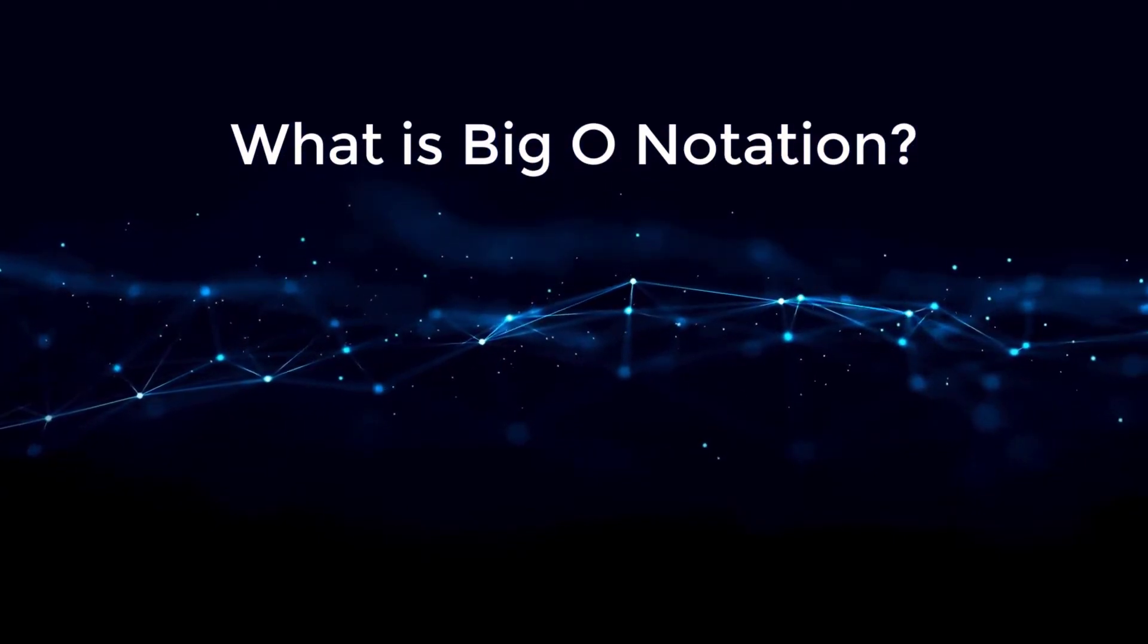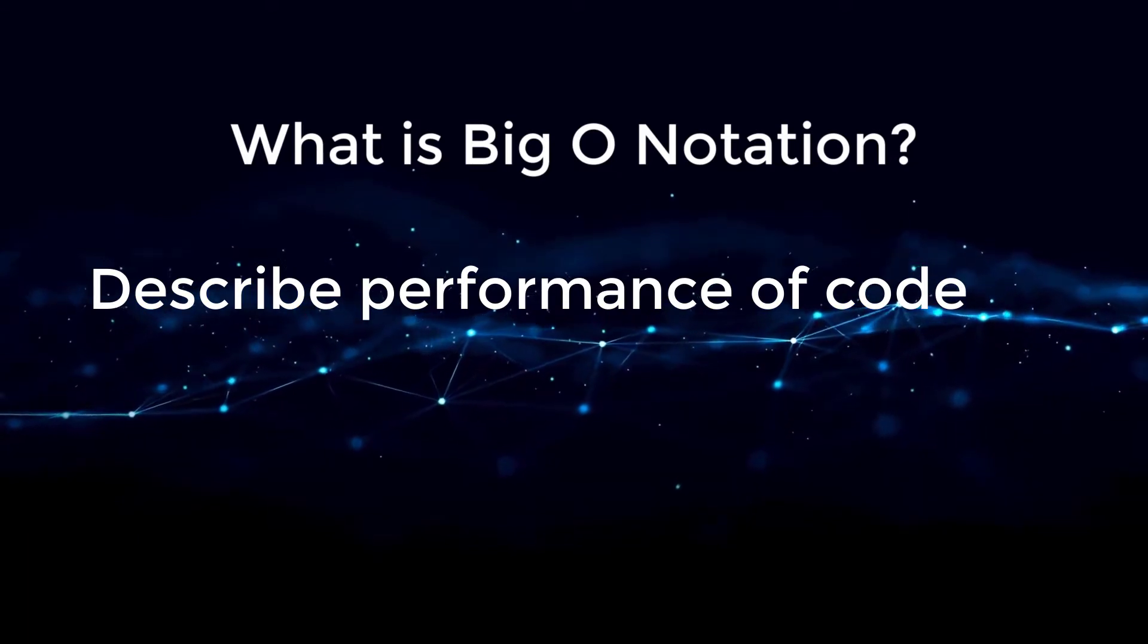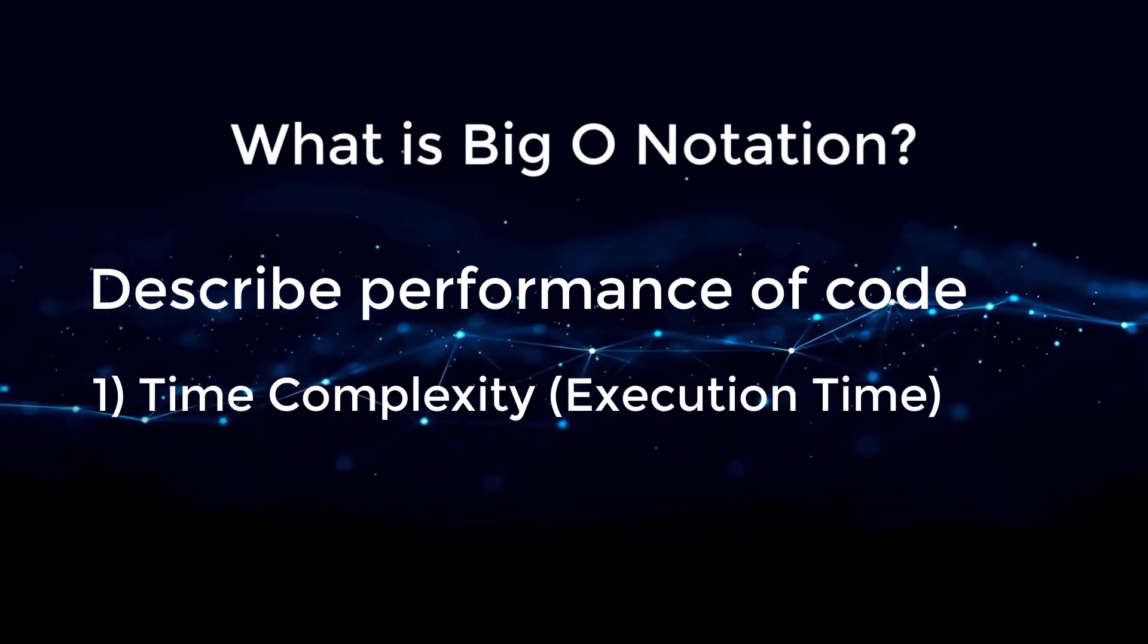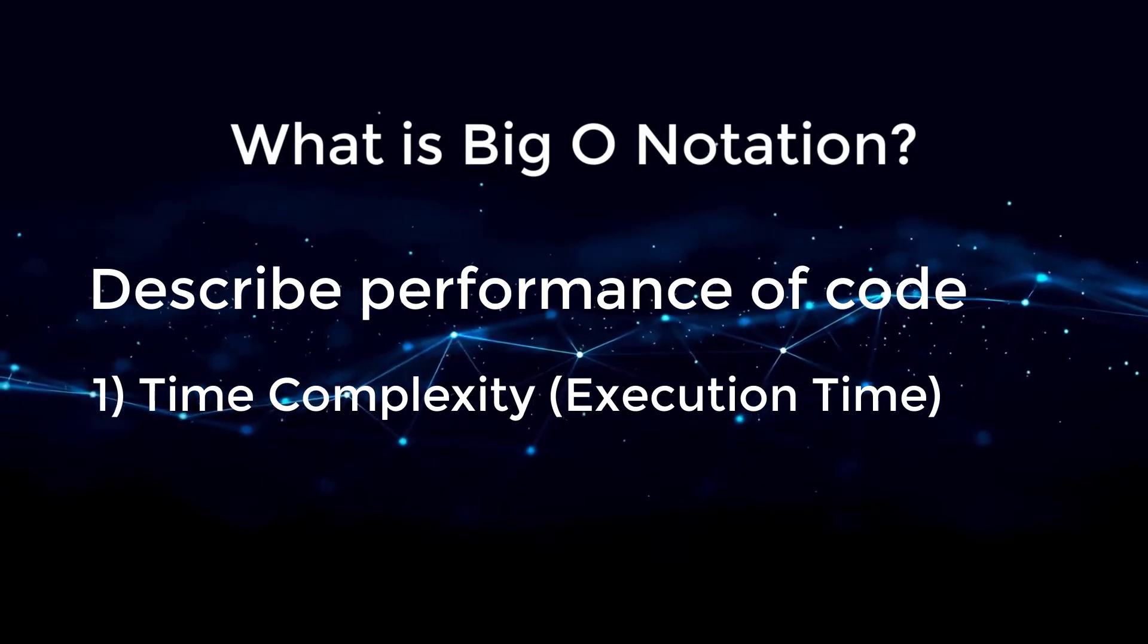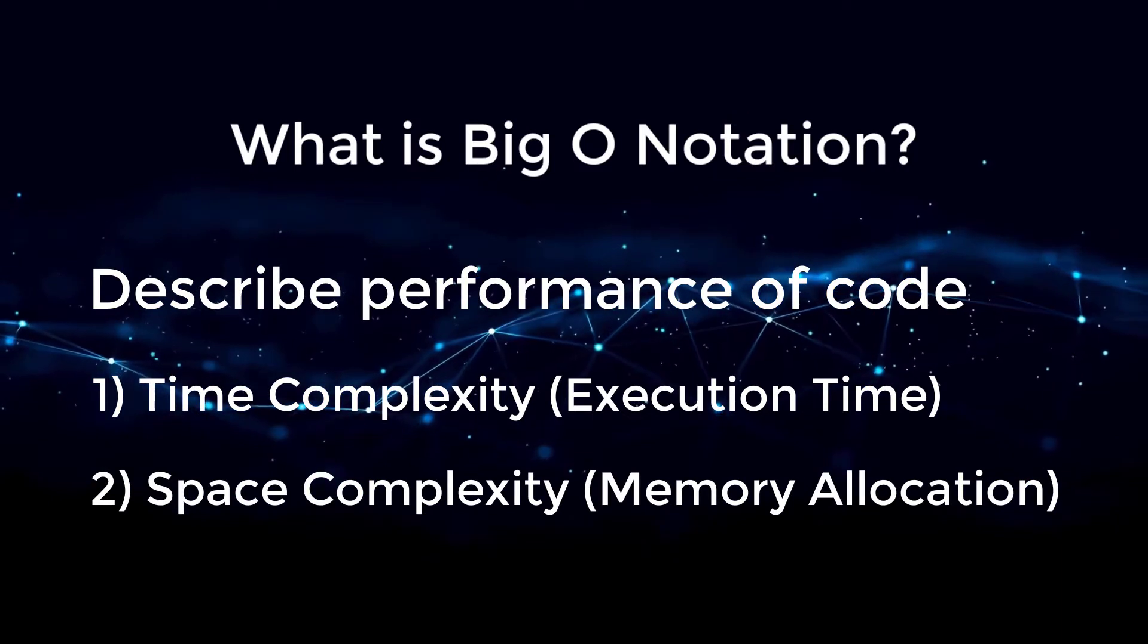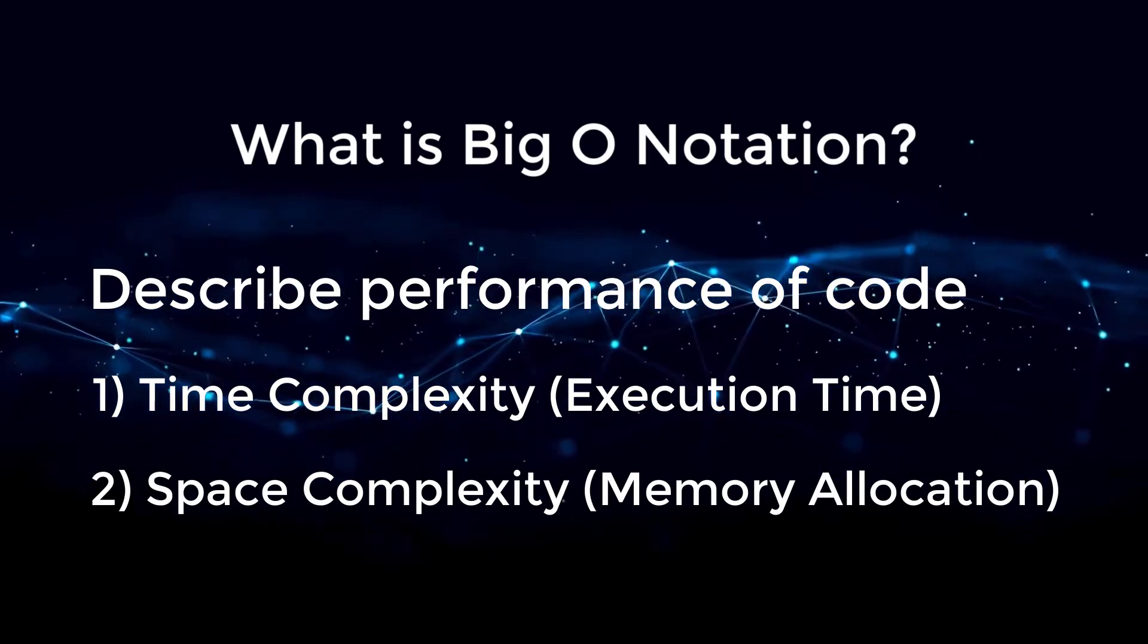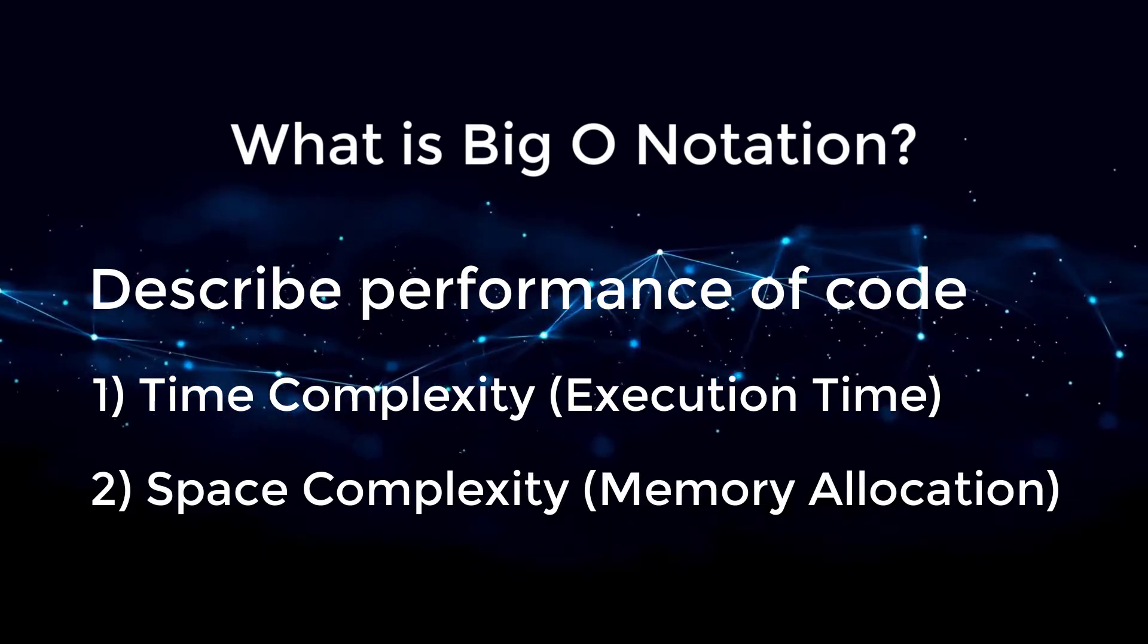Well, it allows you to describe the performance of the code that you write in two different ways. The first way is time complexity, also known as execution time, and this tells you how long your code is going to take to run. And then the second way is space complexity, also known as memory allocation, and this tells you how much memory your code is going to require every time it is ran.